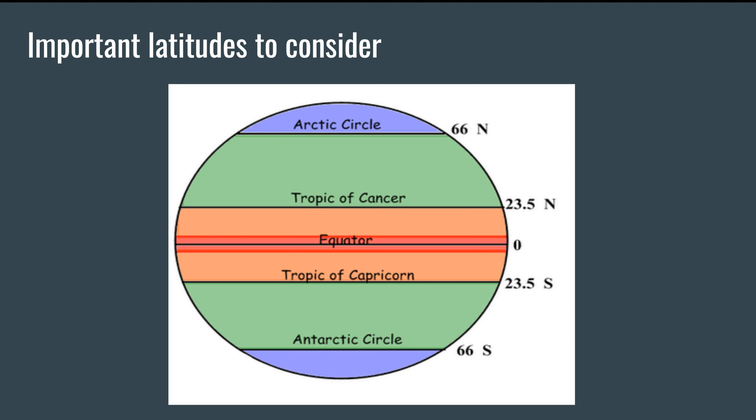Basically this line indicates areas on anything sort of above or below that are places on the earth where there will be at least a day without any sunlight. So that's why those two latitudes are important to consider as well.